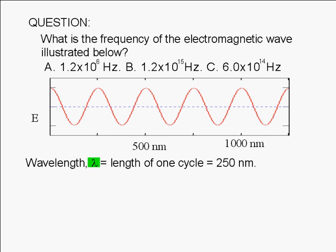We can determine it from the graph by determining the distance between consecutive crests or the distance between consecutive troughs, or the distance between two nodes that have one node between them. Looking at the graph, we can see that the wavelength is 250 nm.